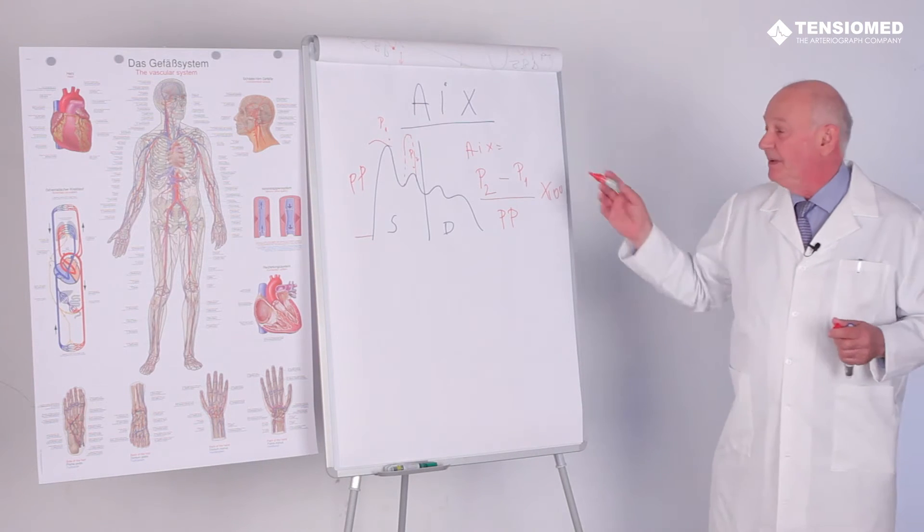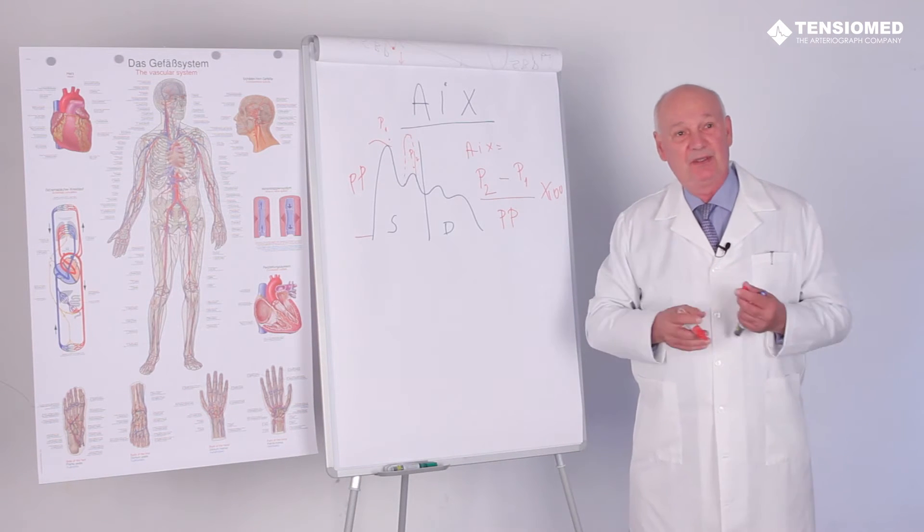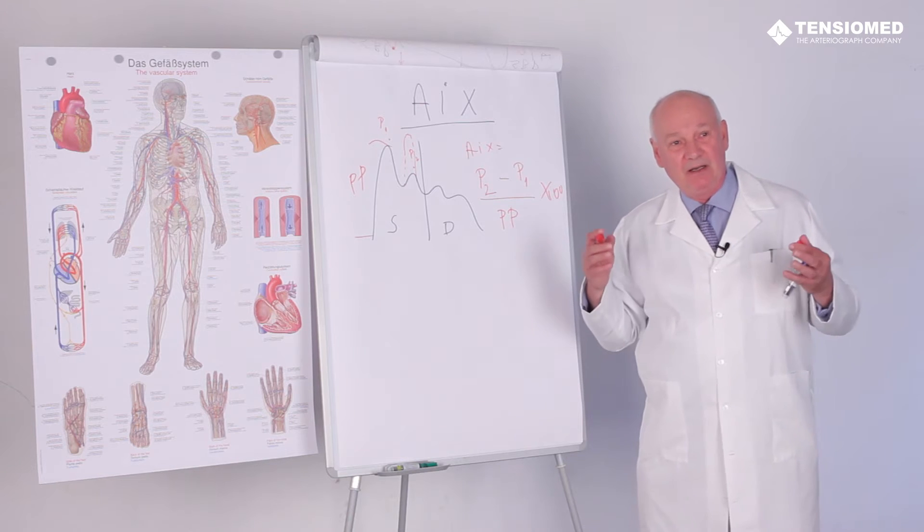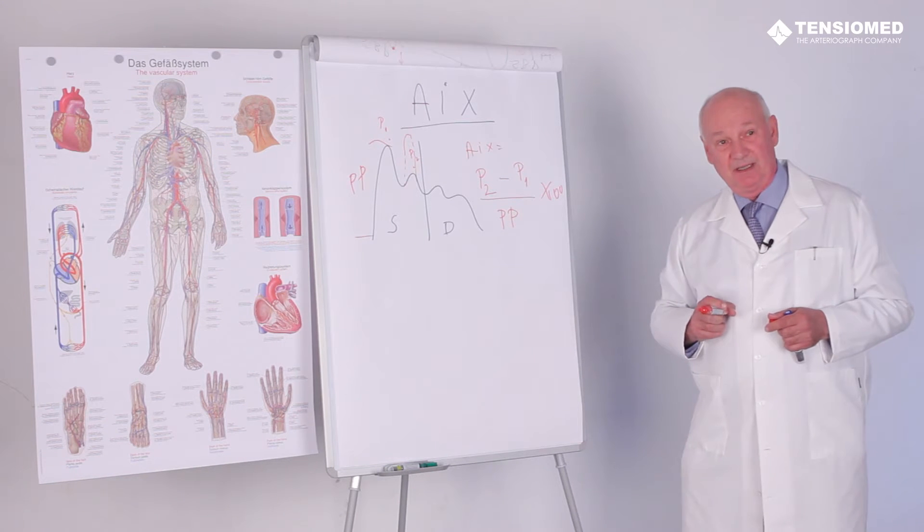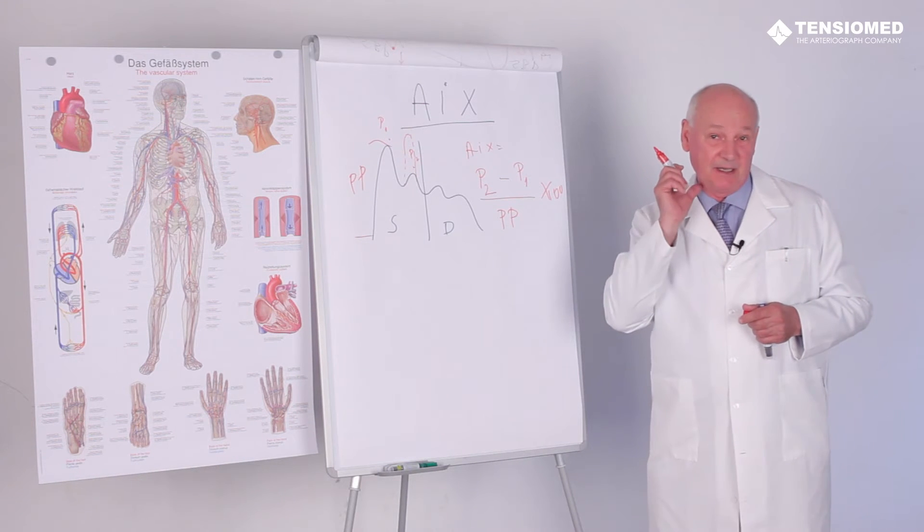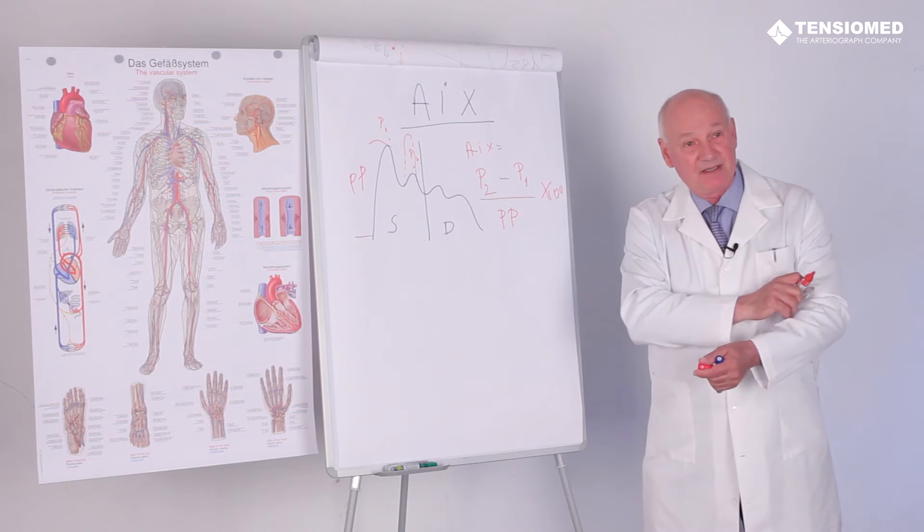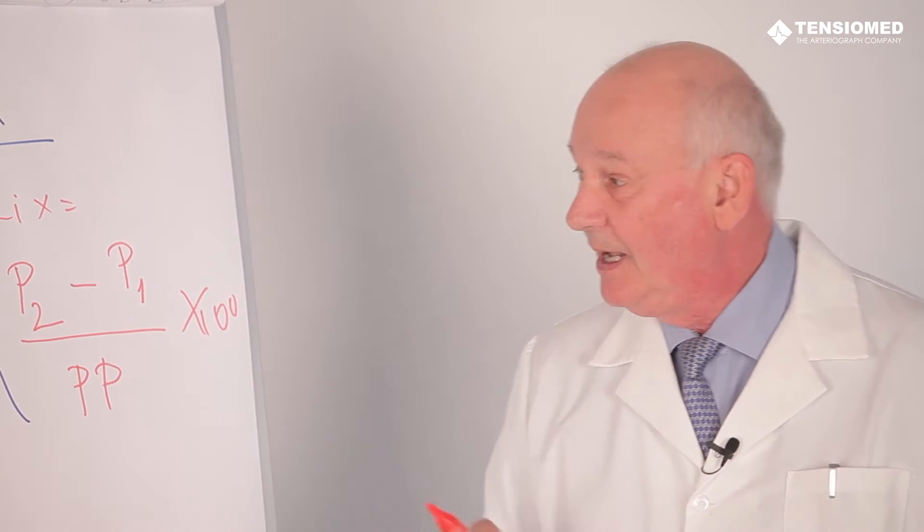The aortic augmentation index is very important, but in all of the large arteries and the medium arteries in the upper body, we can measure the augmentation index. We can measure it at the carotid site, in the brachial site, or radial site.